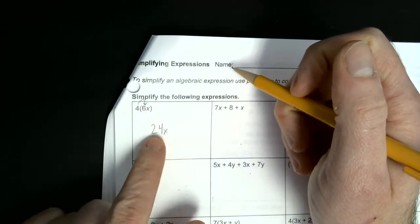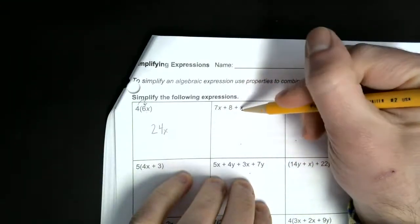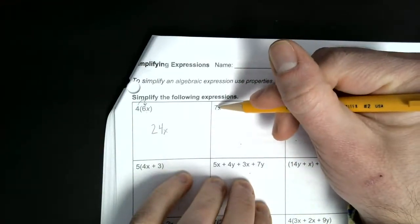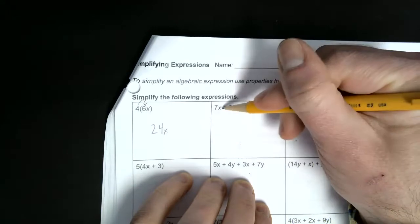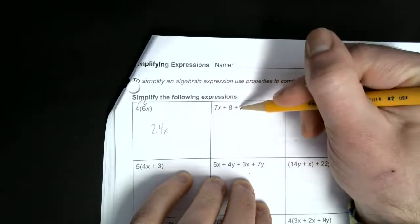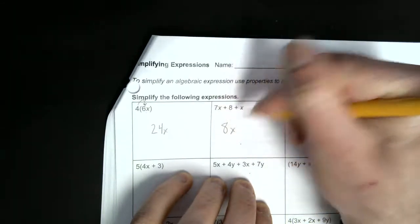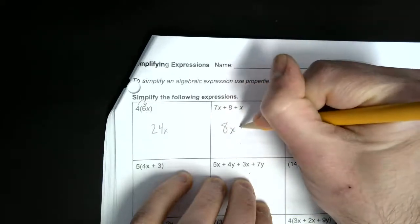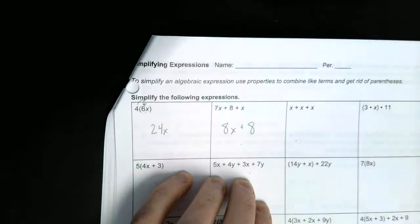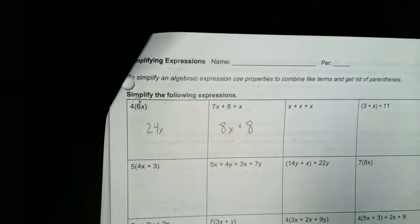Getting rid of the parentheses is going to help us simplify. With this one here, we're looking for like terms — 7x and x. If we combine those, 7x plus another x would be 8x, plus there's only eight ones left, which would be 8. That's simplifying it — it's combining like terms. And that's all we can do because we can't add 8x and 8 together.